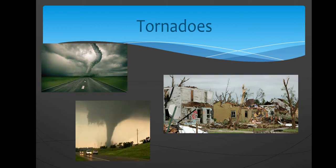Next, tornadoes. A tornado is a violent rotating column of air extending from a thunderstorm to the ground. The most violent tornadoes are capable of tremendous destruction with wind speeds of up to 300 miles per hour. They can destroy large buildings, uproot trees and damage vehicles. They can also drive straw into trees. The damage path can be in excess of 1 mile wide and 50 miles long. In an average year, 1,000 tornadoes are reported nationwide. Most tornadoes form from thunderstorms.